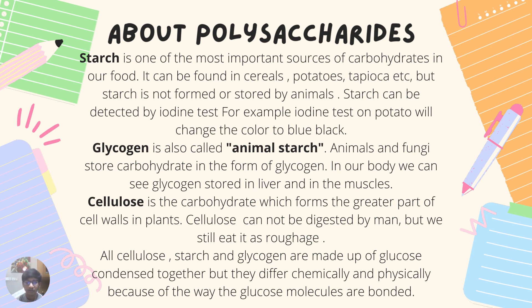Starch can be detected by the iodine test — if you drop iodine on a potato, it turns blue-black, because the potato contains starch. Glycogen, also known as animal starch, is the form of carbohydrate that animals and fungi store in their bodies; in our body, glycogen is stored in the liver and muscles. Cellulose is a polysaccharide that forms the greater part of plant cell walls. Cellulose cannot be digested by humans as we lack the enzymes to do so, but we still eat it as roughage or fiber. All three — cellulose, starch, and glycogen — are made up of glucose condensed together, but they differ chemically and physically in the way the glucose molecules are bonded within them.